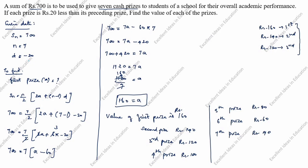Now you can add the first prize to the seventh prize and it comes to a sum of rupees 700. 160 plus 140 is 300, plus 120 is 520, plus 80 is 600, plus 60 is 660, plus 40 is 700. You see, the sum of rupees 700 is used to give seven cash prizes. So this is the answer.